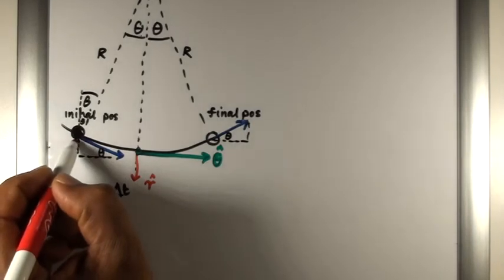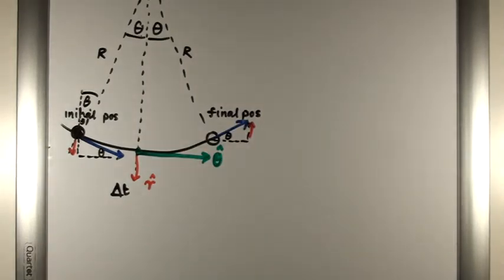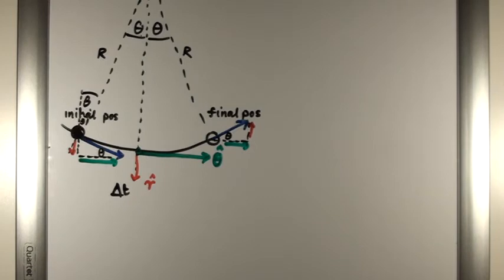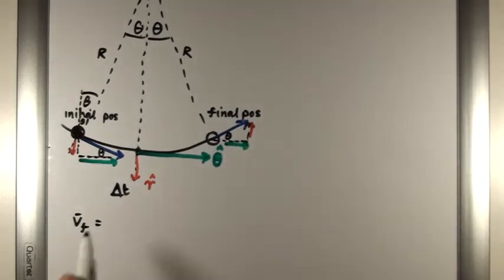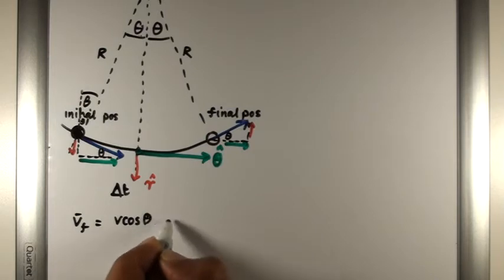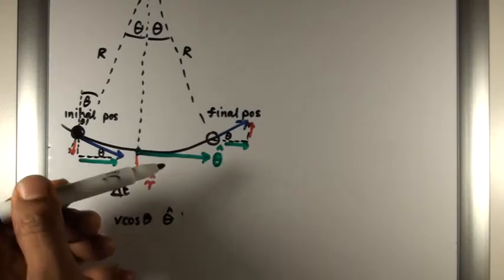We can now break up the velocity of the particle into the radial and tangential vectors, as shown by the red and green arrows. Let's have a look at the final velocity first. The final velocity in the theta direction will be V cosine theta in the tangential direction. That's what this sign here means. Please don't confuse this theta with that theta. This theta just simply means it's the accepted convention for saying that this is the tangential direction.